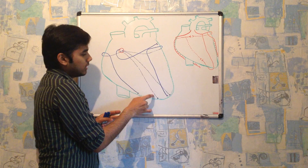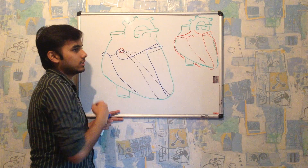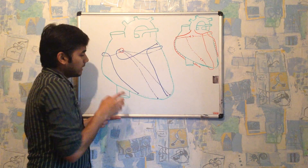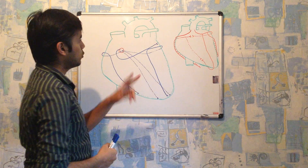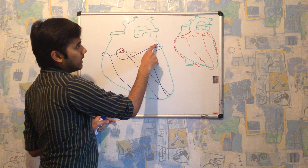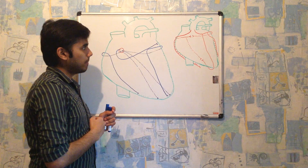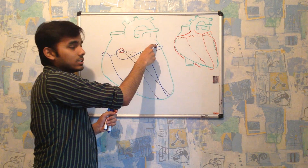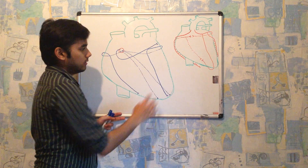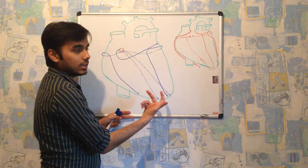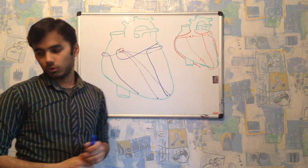The middle cardiac vein originates on the posterior surface of the heart and passes upwards, draining directly into the coronary sinus without deviation. The smallest cardiac vein also drains into the coronary sinus. Then there are two accessory veins: the oblique vein of the left atrium, which passes obliquely from the left atrium and drains into the coronary sinus; and the posterior vein of the left ventricle, which passes posteriorly from the left ventricle upwards and drains directly into the coronary sinus.